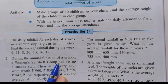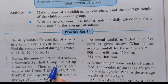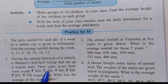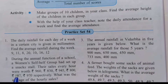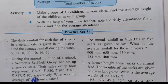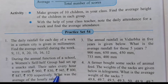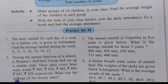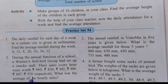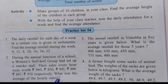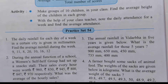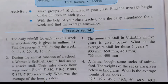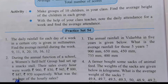Second question: during the annual function of a school, a women's self-help group had set up a snack stall. Their sales every hour were worth Rs. 960, Rs. 830, Rs. 945, Rs. 800, Rs. 847, and Rs. 970 respectively. What was the average of the hourly sales? Here we have to find out the average of hourly sales for 6 hours.